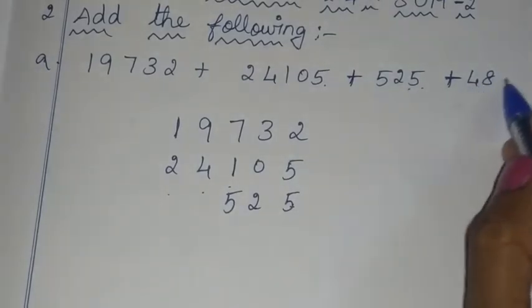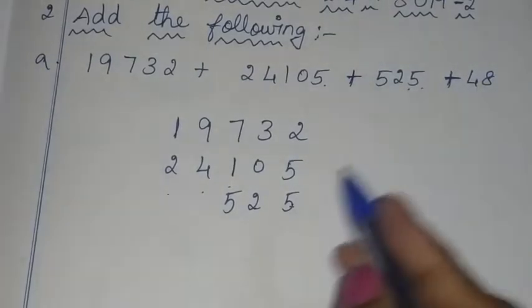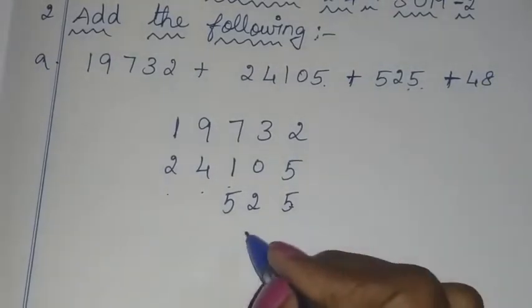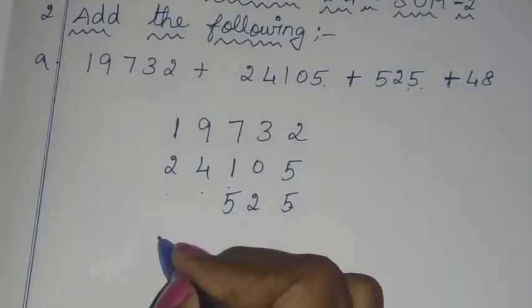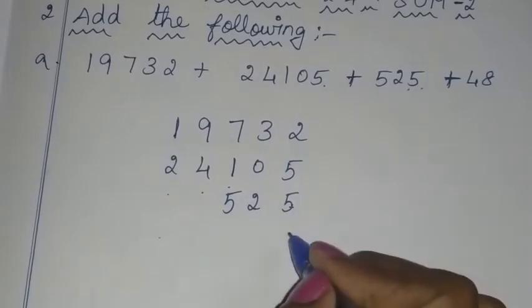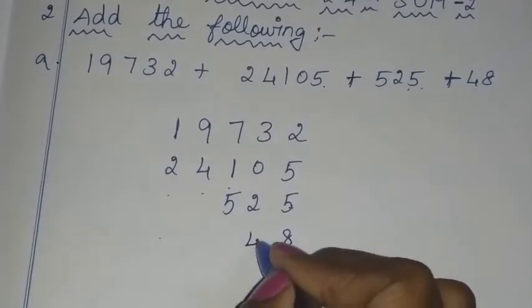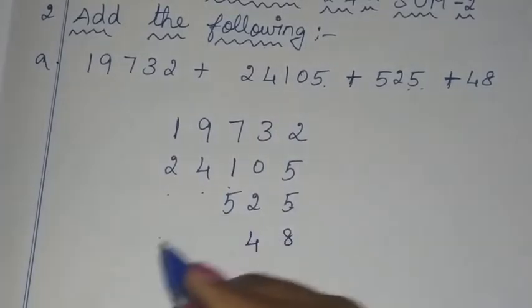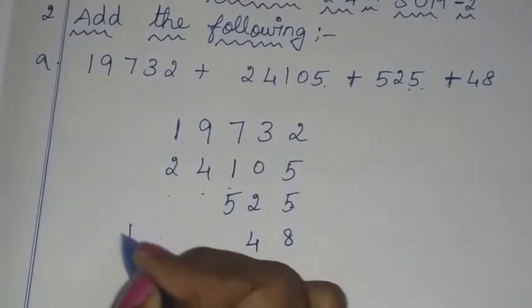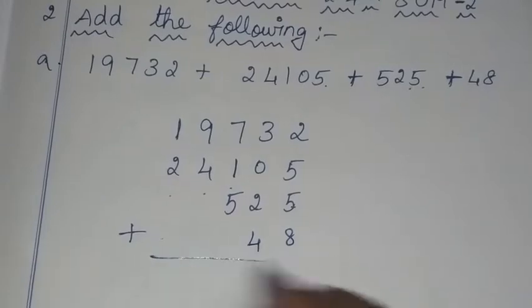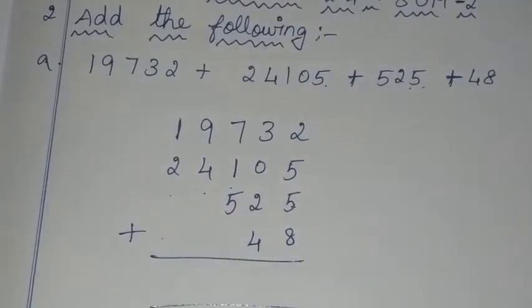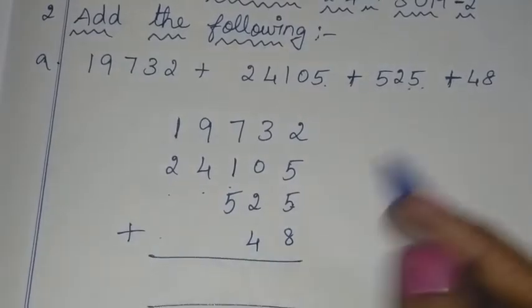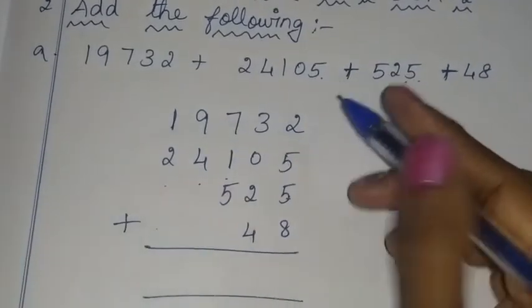Now, here is a 2-digit number. The ones place is like eight, the tens place is like four. So if you want to get the answer, you can get the answer correctly.